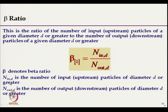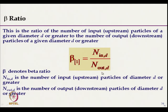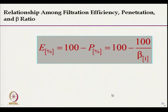N_in for diameter d is the number of upstream particles of diameter d or greater. Filtration efficiency equals 1 minus penetration efficiency. Beta ratio is the reciprocal of penetration and is not expressed as a percentage. Beta ratio is for a particular particle size and above.